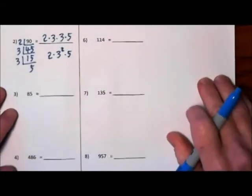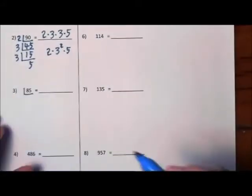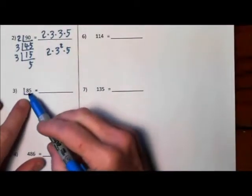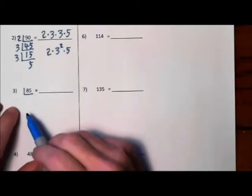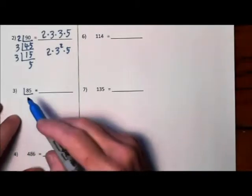We'll take a look at our 85 now. Will 2 go into 85? No. How about 3? 8 and 5 is 13, so 3 won't work. 5 will.